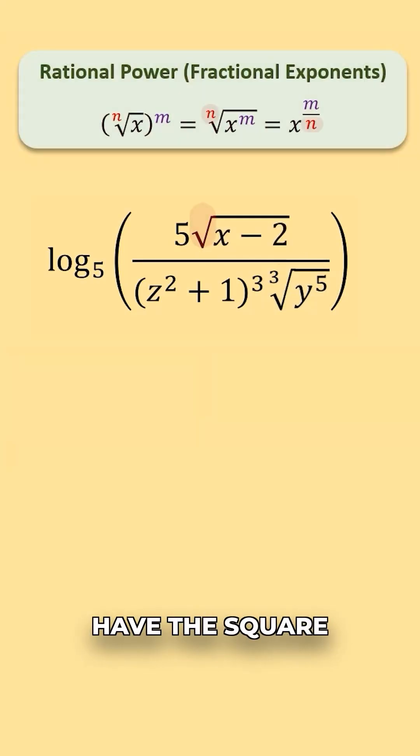So we have the square root of x minus 2. The value of n here is 2 for the square root and the power under the radical is 1, so I can rewrite this as x minus 2 raised to the 1 half power.